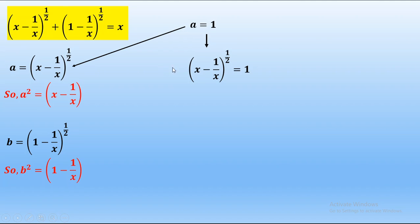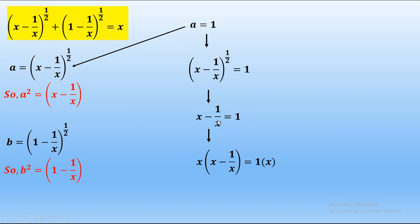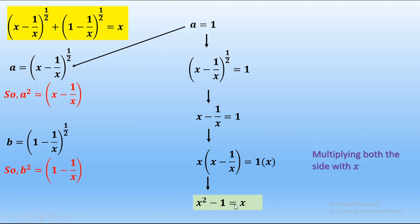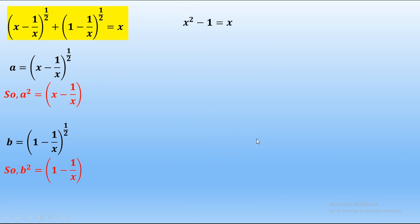Substituting a = 1 back into its definition, (x minus 1/x)^(1/2) = 1. Squaring both sides, x minus 1/x = 1. Multiplying both sides by x to simplify, we obtain x² minus 1 = x. This is a quadratic equation, written in standard form as x² minus x minus 1 = 0.